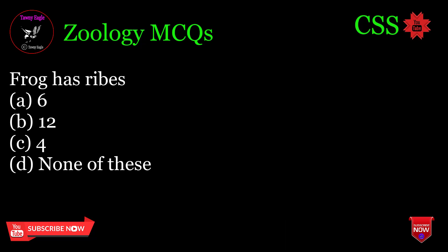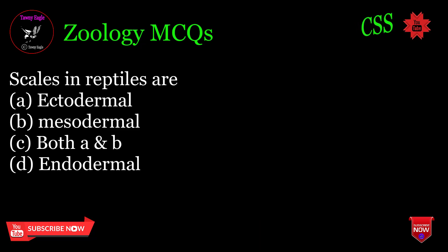Frog has ribs: A. 6, B. 12, C. 4, D. None of these. Correct answer: D.